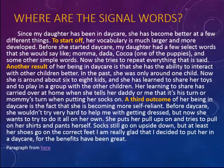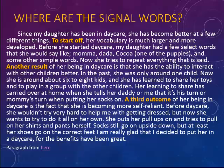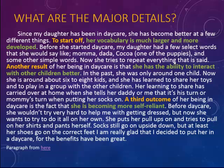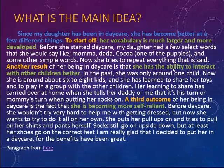The first thing we want to do is identify the signal words — you might want to look at the list from the beginning of this video. In this paragraph we have: 'to start off,' 'another result,' and 'a third outcome.' We use those signal words to point out the three major details: her vocabulary is much larger and more developed; she has the ability to interact with other children better; and she is becoming more self-reliant, shown in green in the paragraph. We then use the supporting details to determine the main idea — she has become better at a few different things. So the cause is that she's been in daycare, and the effects are her larger vocabulary, better interaction with other children, and increased self-reliance.